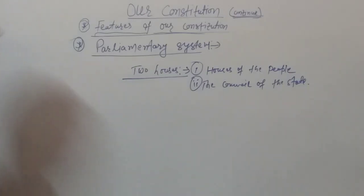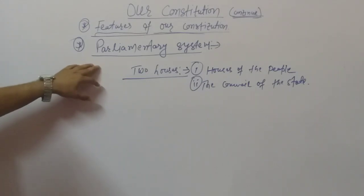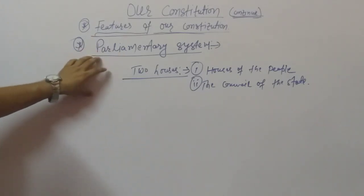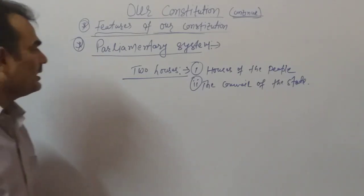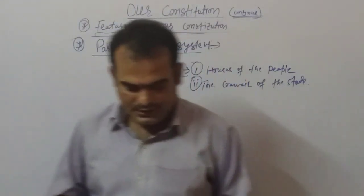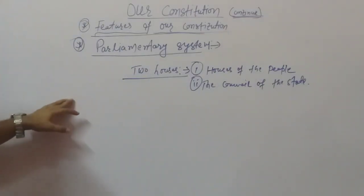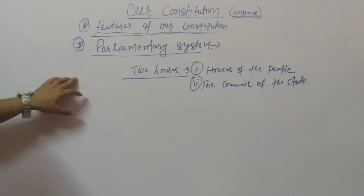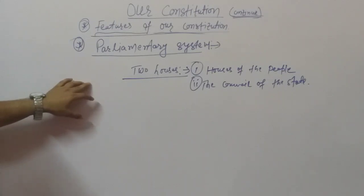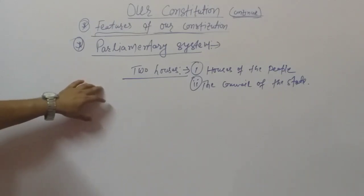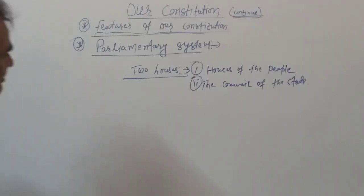We will discuss the House of the People and the Council of the State. The president and the state governor are the nominal heads of the executive — it is a paper-based system. The real power of the state lies with the Council of Ministers.